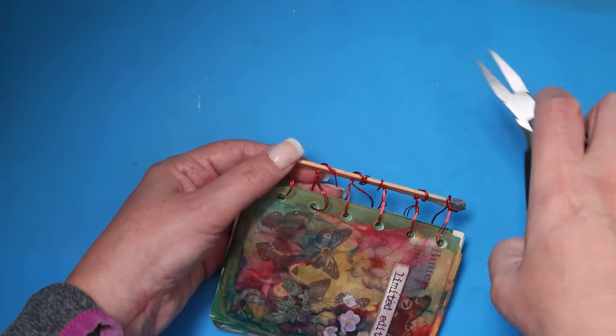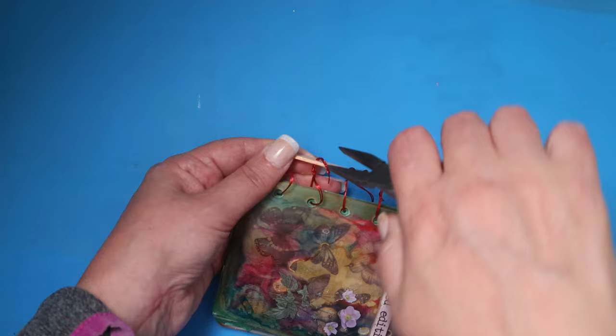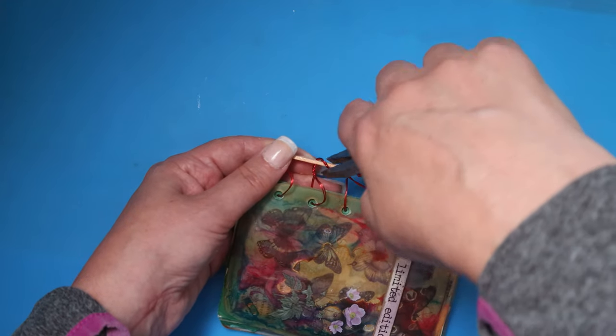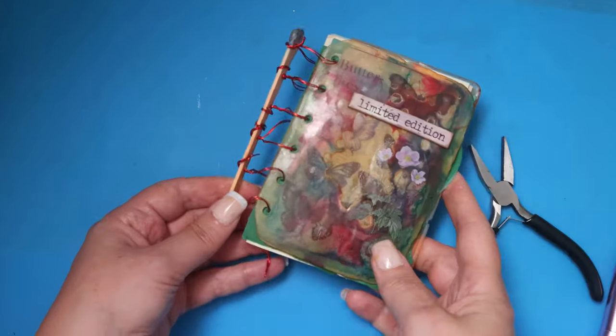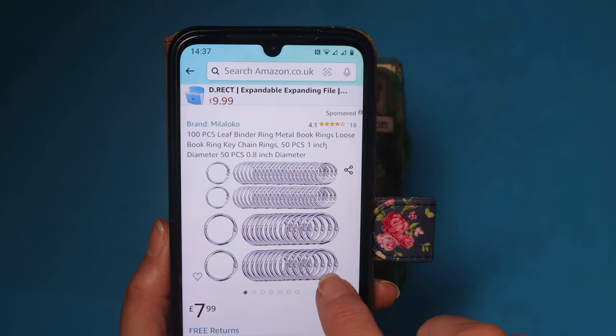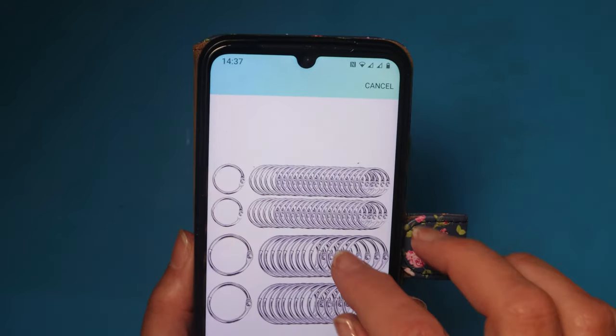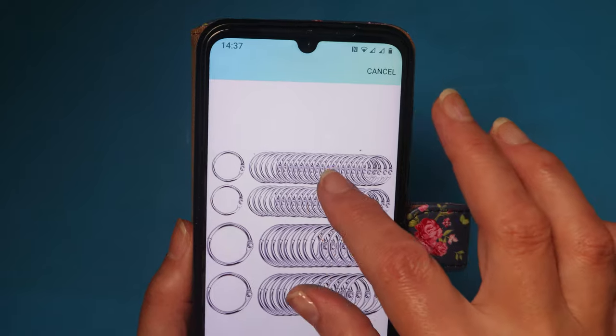I use pliers to wind the wire around the stick, and these are the journal rings you can get if you want to use those instead. You can get them in different sizes.